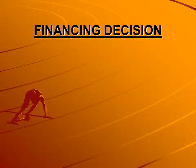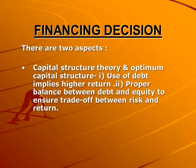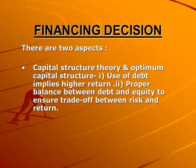Then we come to the financing decision, which also has two aspects. The first aspect involves capital structure theory and optimum capital structure — the financial manager has to ensure that an optimum capital structure is maintained, which involves the use of debt. There has to be an adequate use of debt because use of debt implies higher return. The second aspect is that there has to be a proper balance between debt and equity to ensure a trade-off between risk and return.